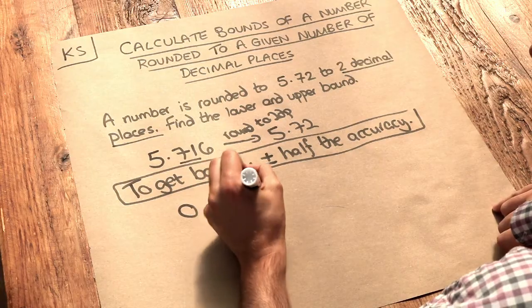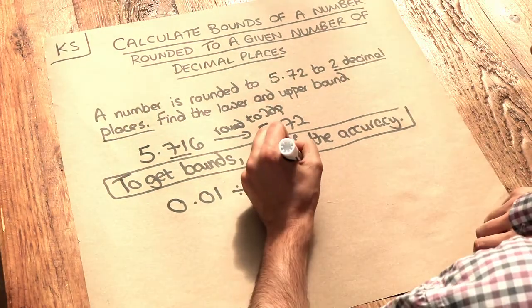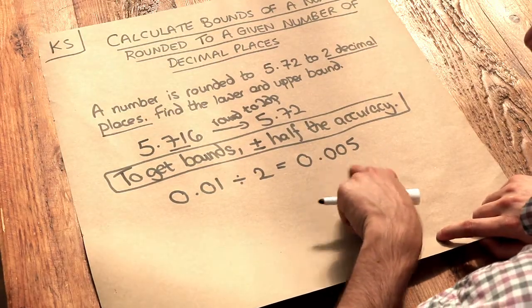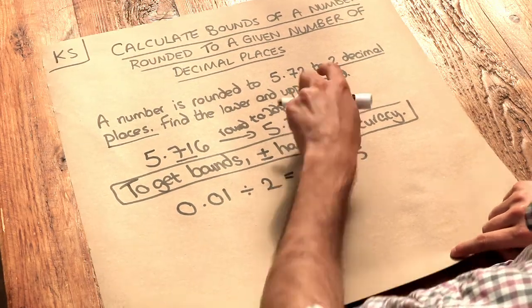So if we divide that by two then we get 0.005. So we add or subtract that half accuracy to 5.72.